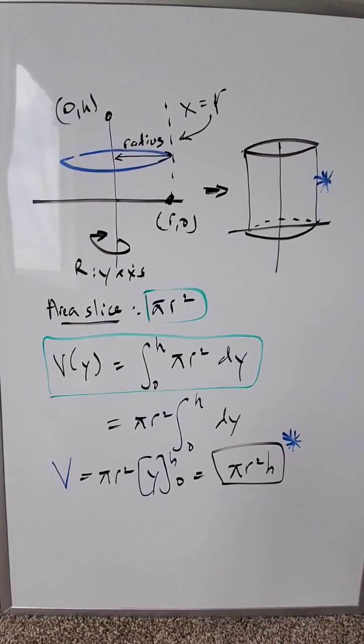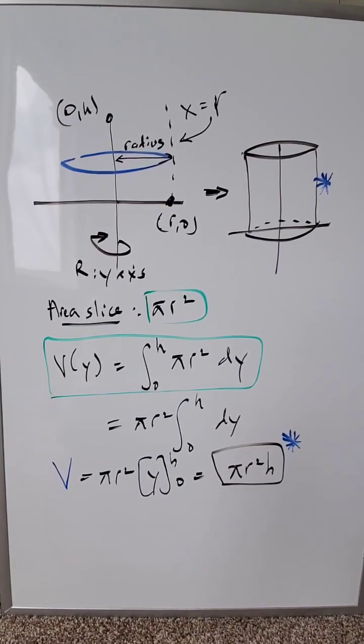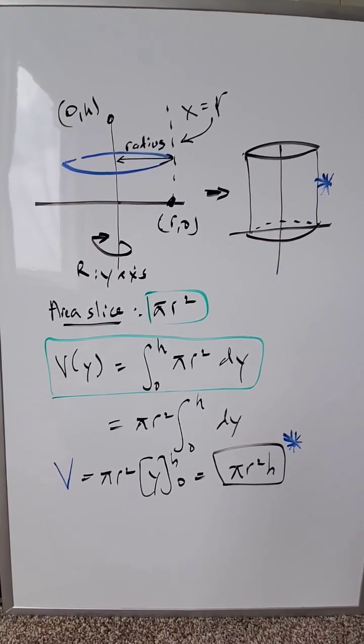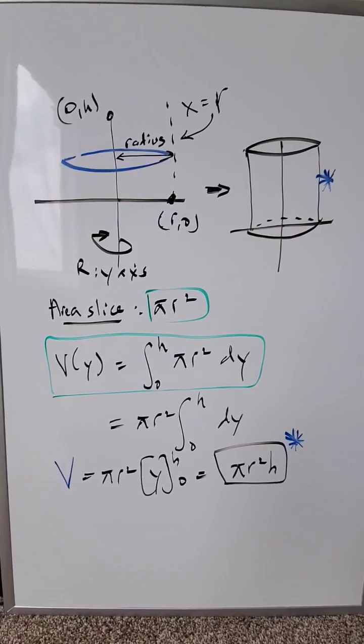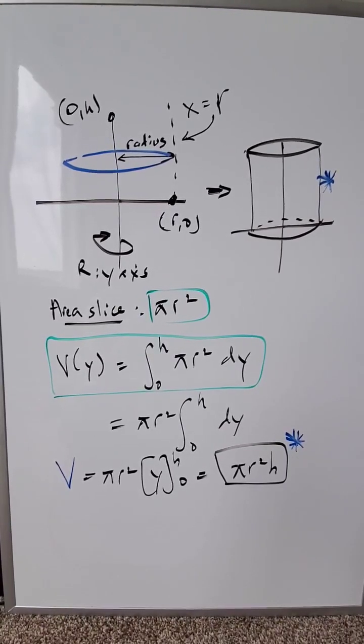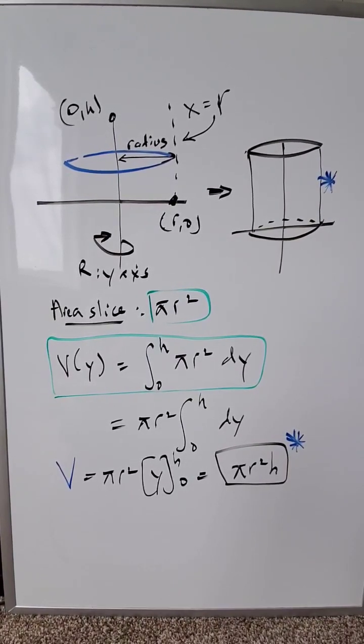Carry that definite integral all the way through to completion and you end up with pi r squared h, which represents the volume of a cylinder, where the rotational basis is around the y-axis. A similar exercise can be done for everything around the x-axis.